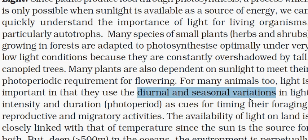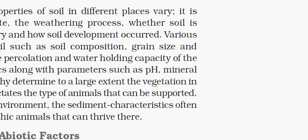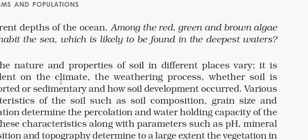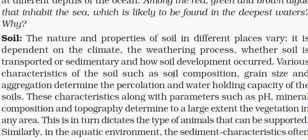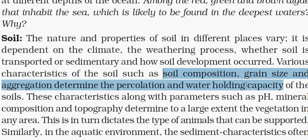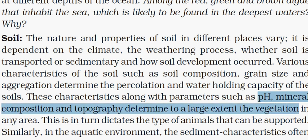Soil is home for many living beings, and the type of soil controls the type of living being found there. The type of soil is controlled by factors like soil composition, grain size, and aggregation, which determine percolation and water-holding capacity. Other parameters that characterize soil include pH, mineral composition, and topography. All of these factors collectively control the type of vegetation or plants that can grow in a specific location or type of soil.